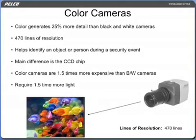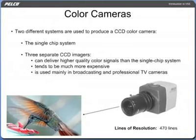Color cameras generate 25% more detail than black and white cameras, and this increased detail helps when trying to properly identify an object or person during a security event. Color cameras have 470 lines of resolution. The main difference between a black and white and color camera is the CCD chip. Color cameras are 1.5 times more expensive than black and white cameras and require 1.5 times more light. Two different systems are used to produce a CCD color camera: the single chip and the three separate CCD imager systems.